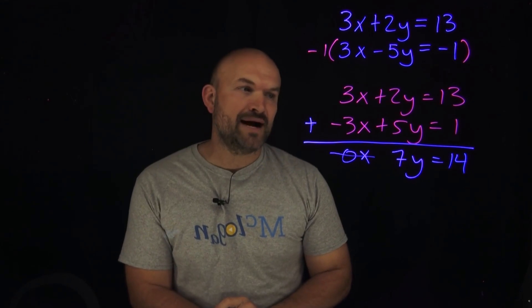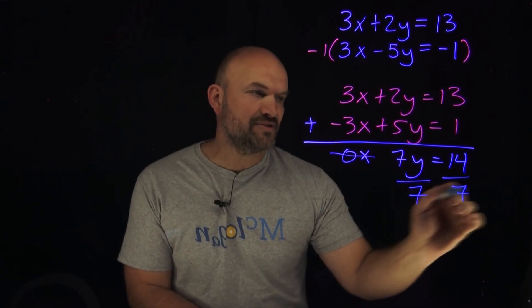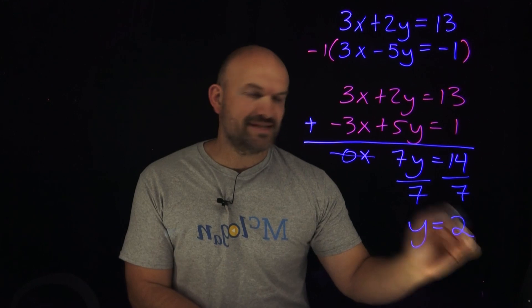Now I can go ahead and solve for y by dividing by 7 on both sides, and I get y equals 2.